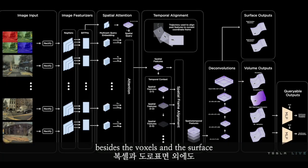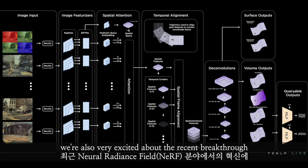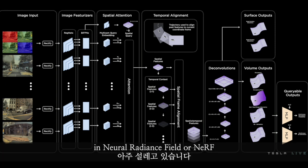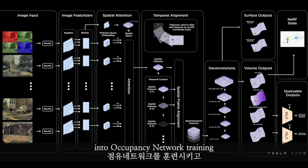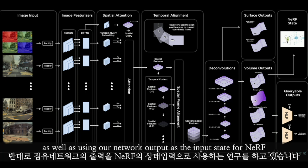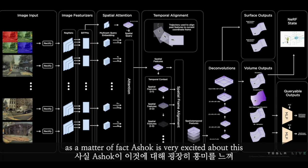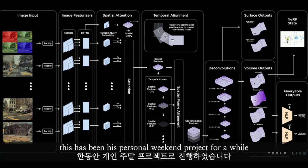Besides the voxels and the surface, we are also very excited about the recent breakthrough in neural radiance fields, or NeRF. We are looking into both incorporating some of the nice NeRF features into occupancy network training, as well as using our network output as the input state for NeRF. As a matter of fact, Ashok is very excited about this — it has been his personal weekend project for a while.